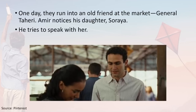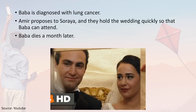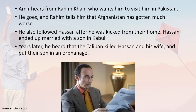One day they run into an old friend at the market, General Taheri, and Amir notices his daughter Soraya and tries to speak to her. Then Baba is diagnosed with lung cancer, and Amir proposes to Soraya. They hold the wedding quickly so that Baba can attend, and a month later Baba dies.